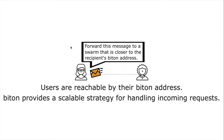Biton has an addressing scheme where users are identified by a Biton address. It also provides a scalable strategy for handling incoming requests, which allows you to own multiple nodes across the network and have more traffic coming to you without bottlenecks that could exist because of the network topology itself.